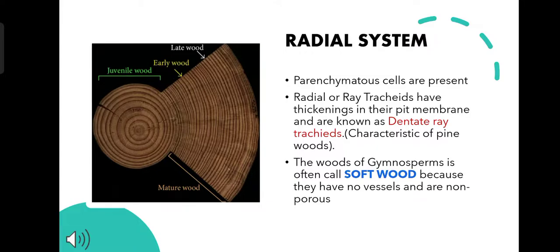Radial system. The radial system mostly comprises parenchymatous cells and sometimes they also contain ray tracheids. These tracheids have thickenings in their pit membrane, commonly known as dentate ray tracheids. In general, the wood of gymnosperms is often called softwood because they have no vessels and are non-porous in nature.